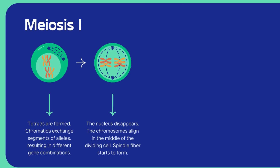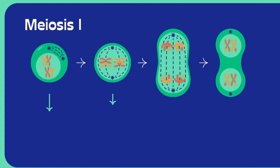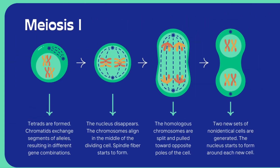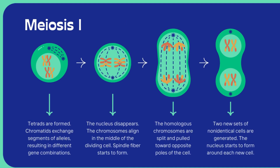The chromosomes align in the middle of the dividing cell on spindle fibers. The remaining process is similar to mitosis. In the third step, the homologous chromosomes are split and pulled toward opposite parts of the cell. Two sets of non-identical cells are generated — in mitosis identical cells are generated, but in meiosis two non-identical cells are generated. The nucleus starts to form around each new cell wall.